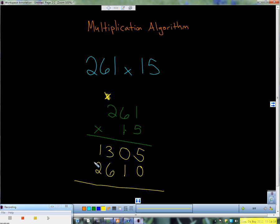Now my only step left is to add these two numbers together. 5 plus 0 is 5, 0 plus 1 is 1, 6 plus 3 is 9, and 2 plus 1 is 3. So my answer for this problem is 3,915.